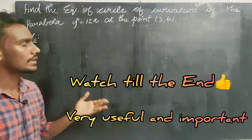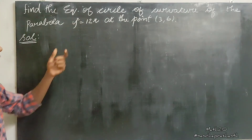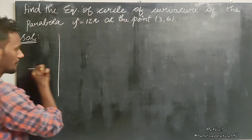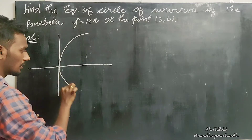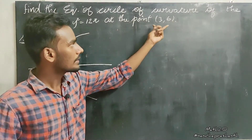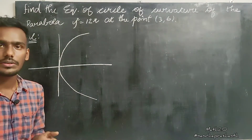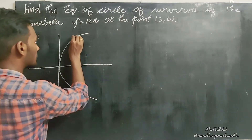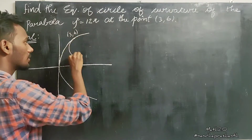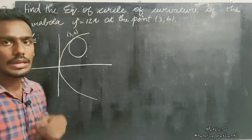So, in this question, we will talk about one short note. We will talk about y squared is equal to 12x — a rightward parabola. In this rightward parabola, at the point (3, 6), we will look at the circle of curvature. The circle of curvature is an equation — at the point (3, 6), this point is a circle of curvature. How are we going to find the equation of the circle of curvature?